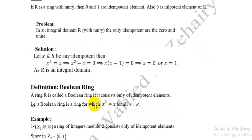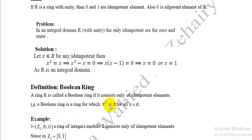Now we define the boolean ring. A ring R is called a boolean ring if it consists only of idempotent elements — that is, if all elements are idempotent. So a boolean ring R satisfies x² = x for all x belonging to R.